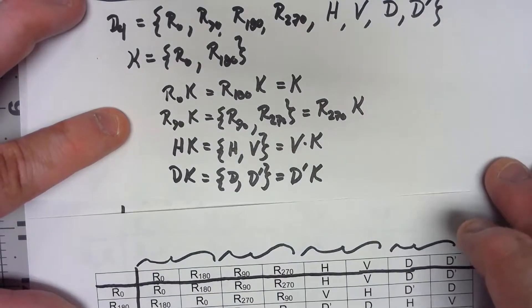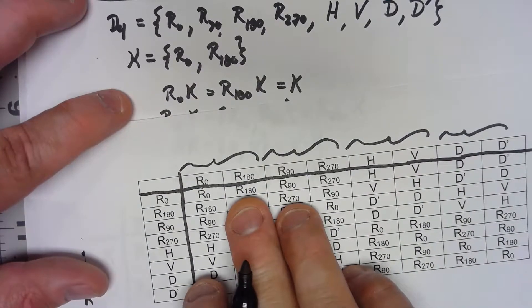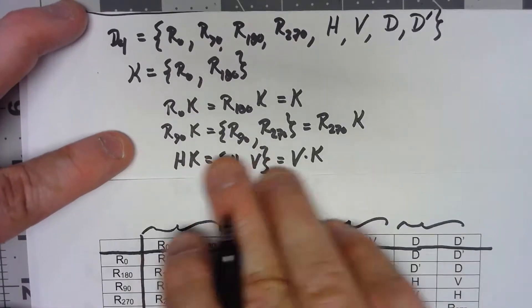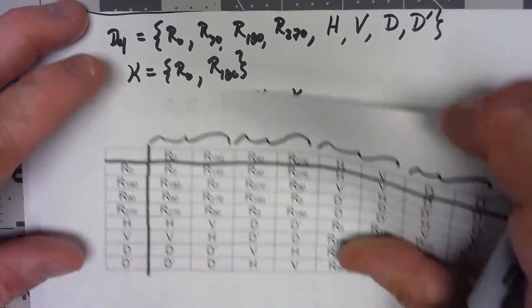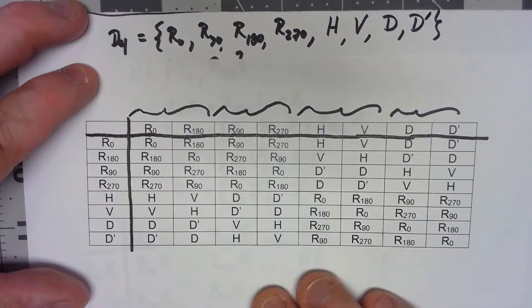So R0 and R180 create the same coset. I want to be sure that R0 and R180 are next to each other. R90 and R270 create the same coset, so I want to make R90 and R270 be next to each other in both directions.